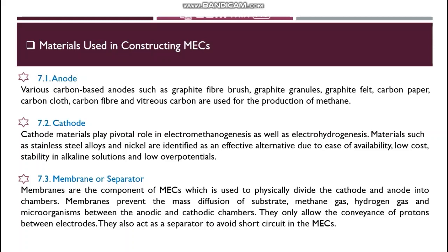Anode materials should also have fouling resistance, scalability, ease of construction, and low cost. Cathode materials play a pivotal role in electromethanogenesis as well as electrohydrogenesis; electromethanogenesis needs less energy input compared to electrohydrogenesis. Cathode material properties — its surface area, catalytic activity, and biocompatibility — play a significant part in microbial electrolysis cell performance. The overall performance of the microbial electrolysis cell depends upon the electrodes and the materials from which they are developed, since methane production via carbon dioxide reduction takes place on both anode and cathode. Membranes physically divide the cathode and anode into chambers and are essential for designing two-chambered microbial electrolysis cells.